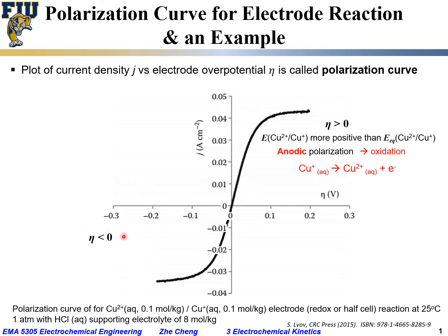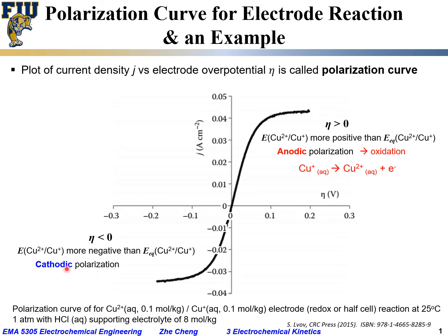On the other side, we have negative η — negative overpotential — and correspondingly negative current. Negative overpotential means the actual electrode potential is more negative than the equilibrium electrode potential. Because it is more negative, we experience cathodic polarization, which corresponds to reduction. For this Cu²⁺/Cu⁺ pair, reduction means Cu²⁺ combined with an electron to form Cu⁺.